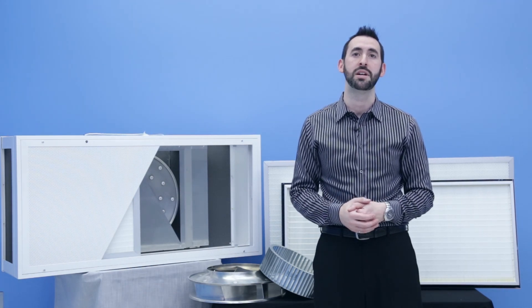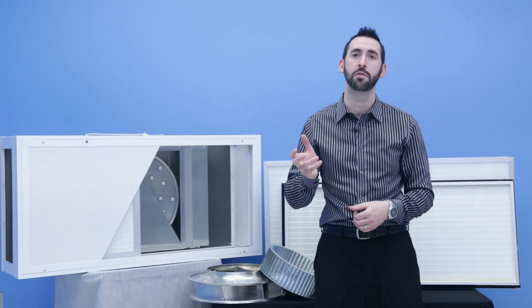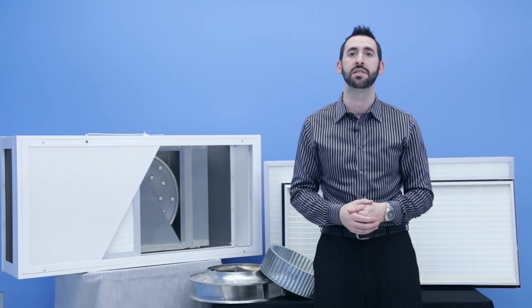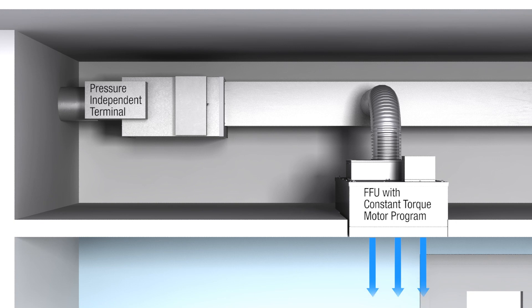The second motor program is constant torque. The constant torque motor program maintains the torque or the rotational force of the motor independent of the static pressure as the filter loads. To maintain constant airflow through the fan filter unit with a constant torque program, an upstream pressure independent terminal or Venturi valve is required.